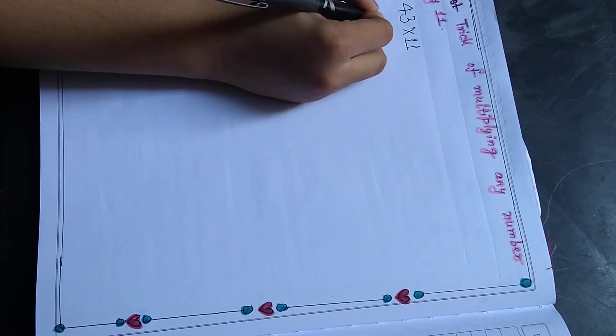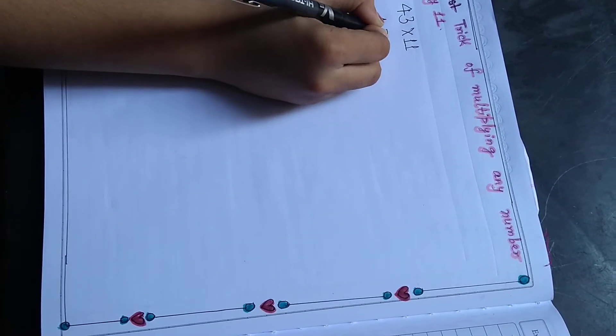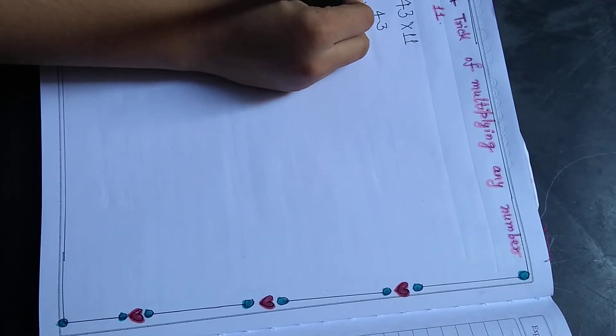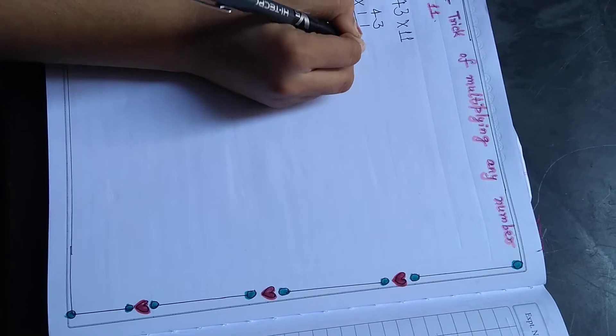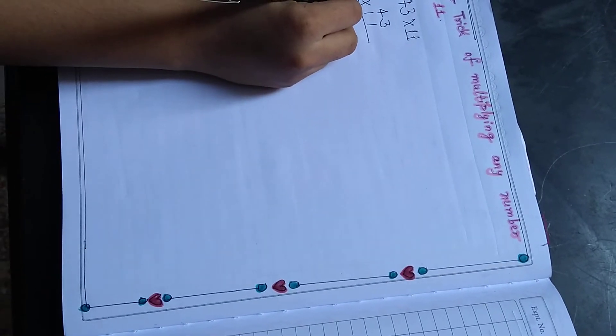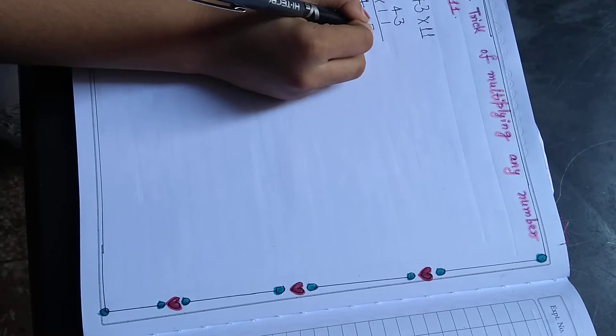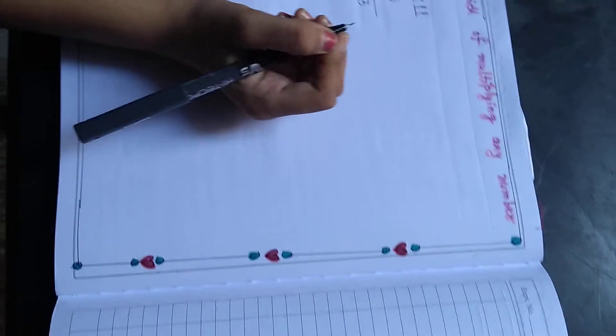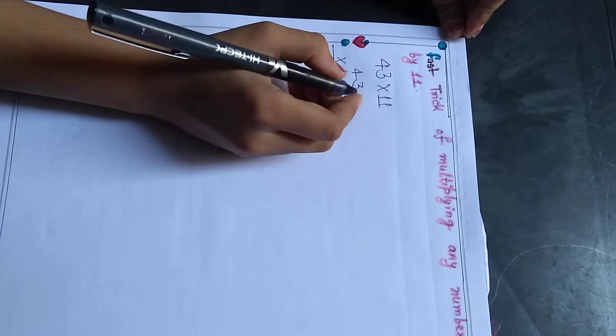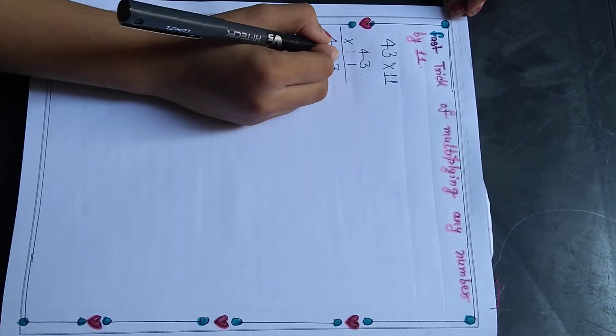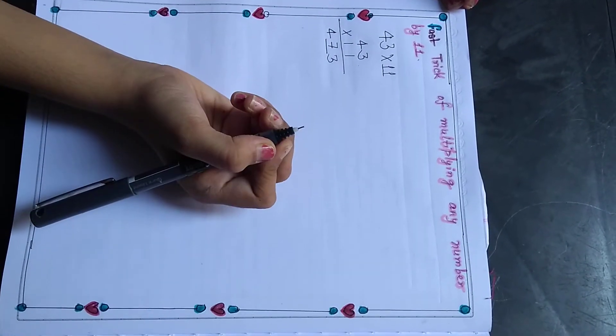If we have to multiply any number by 11, first we have to write the equation. Now we have to write the first number here and the second number here and leave one gap. In the gap we have to write the sum of these two numbers. So we will add it, 4 plus 3 is equal to 7. So the answer is 473.